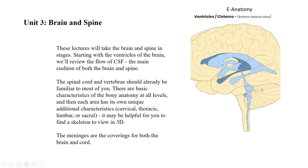This image from e-anatomy comes from their diagram section for the brain. When using e-anatomy, be sure to look not only at the images but also the diagrams, as they can be very helpful. This particular diagram shows the lateral ventricles — one on each hemisphere of the brain — displayed in two different colors, making it easier to distinguish them.